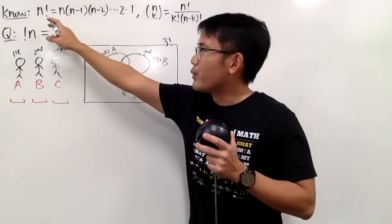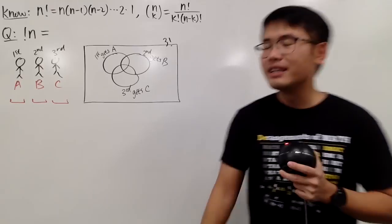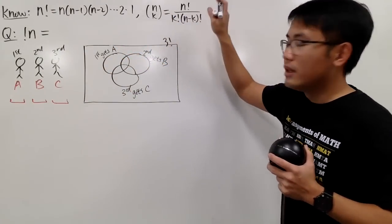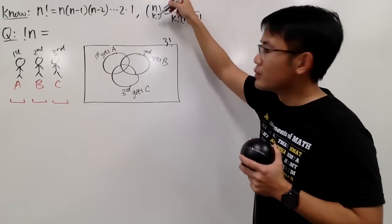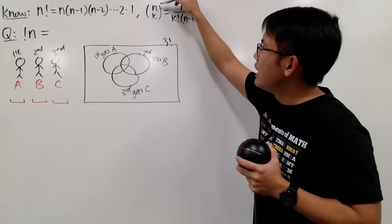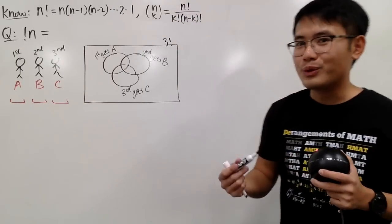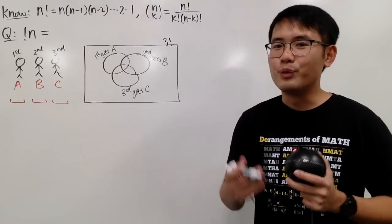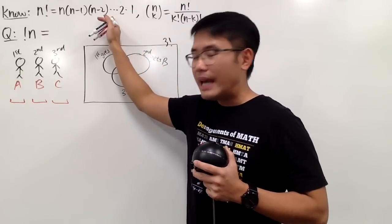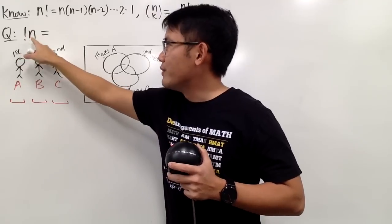As we all know, when we have n factorial, this represents the number of ways for us to arrange n different objects, and this is also called the permutation. This right here is called the combination, and you can say this as 'n choose k.' This is the number of ways to choose k objects out of a total of n objects. This is extremely useful when you want to compute the probability of winning a lottery jackpot. Now let's talk about the subfactorial of n, namely the derangement of n.